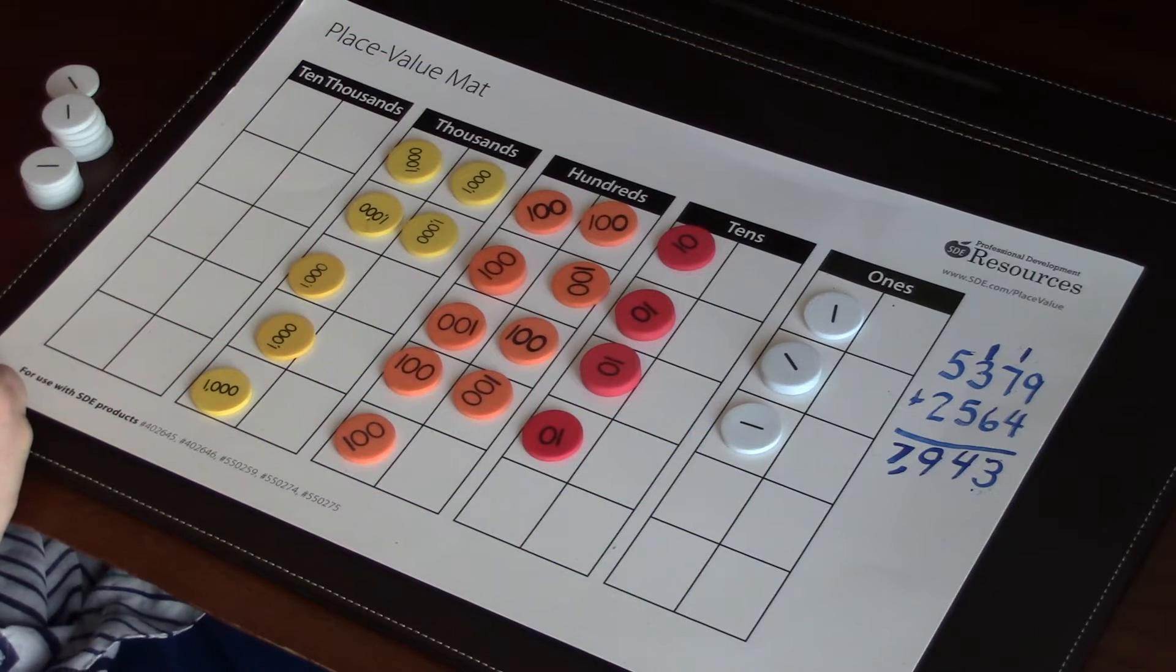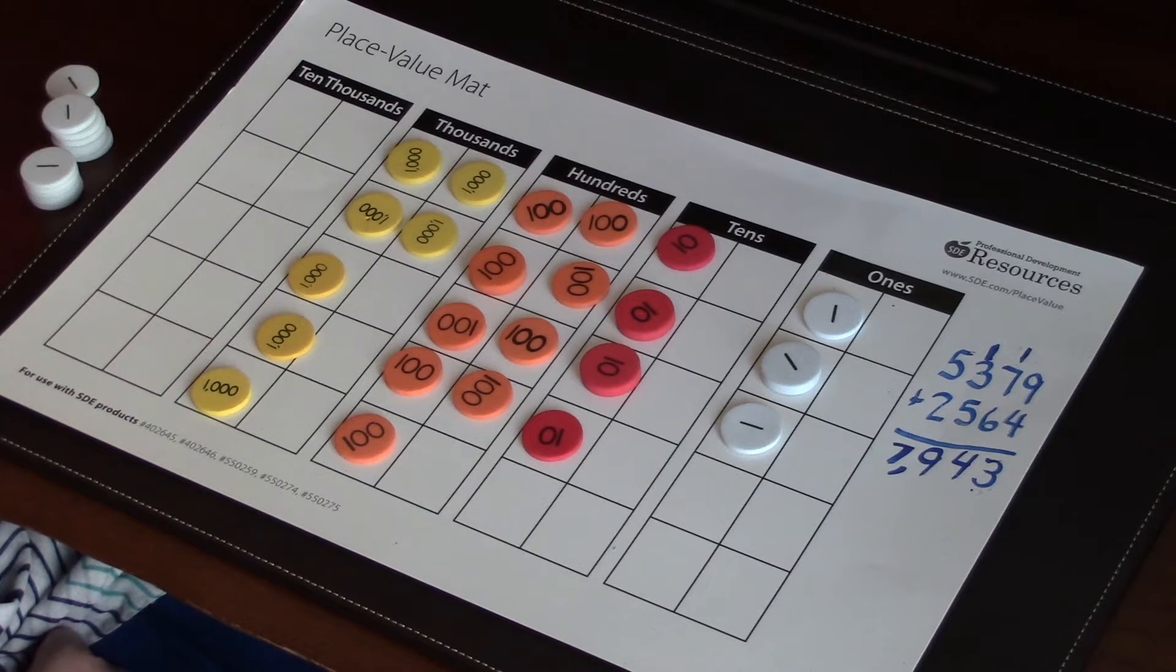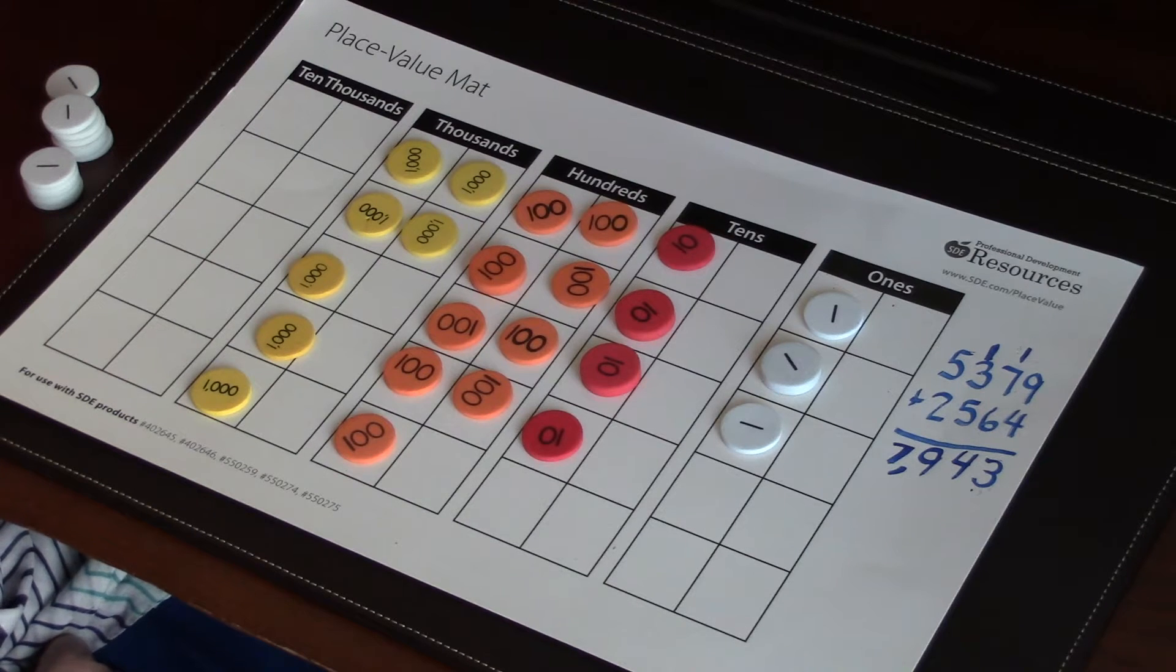So now we're going to use the board to demonstrate how to teach subtraction with the standard algorithm. When teaching subtraction, use your addition to lead into your subtraction problem. So have the child start by doing an addition problem, as you can see it's already finished on our board.